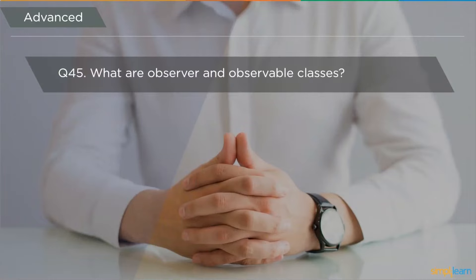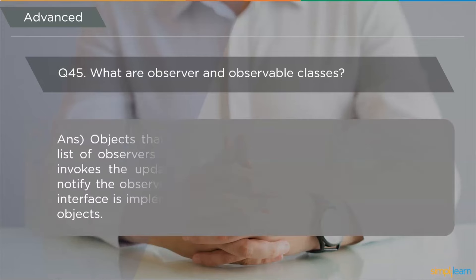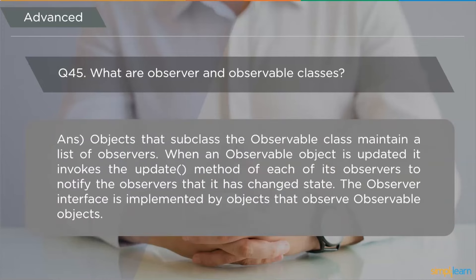The next question is: what are Observer and Observable classes? Objects that subclass the Observable class maintain a list of observers. When an Observable object is updated, it invokes the update method of each observer to notify them that it has changed its state. The Observer interface is implemented by objects that observe Observable objects.